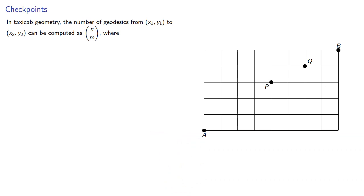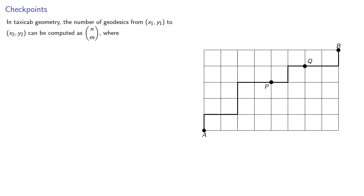In taxicab geometry, the number of geodesics from one point to another can be computed as n choose m, where n is the distance between the two points as measured by the taxicab metric, and m is either the vertical or the horizontal displacement.